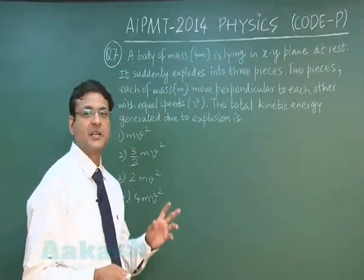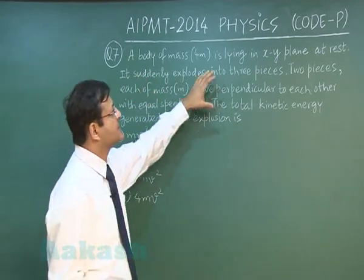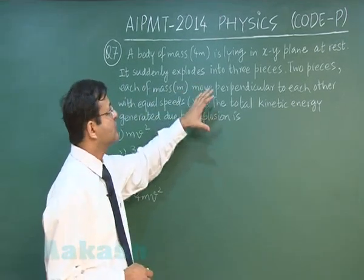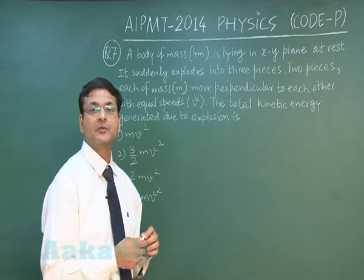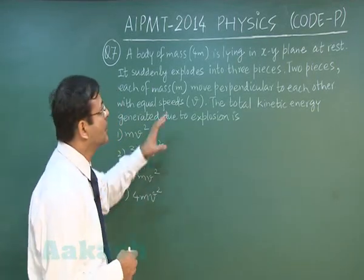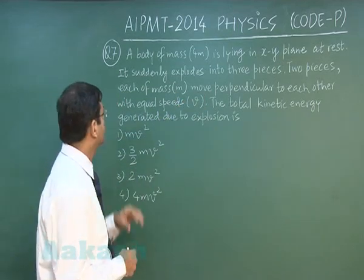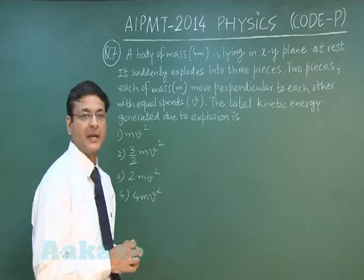In question number 7, a body of mass 4m is lying in the x-y plane at rest. It suddenly explodes into 3 pieces. The moment explosion is there, that means you have to think in terms of linear momentum balance. Two pieces, each of mass m, move perpendicular to each other with equal speeds v.